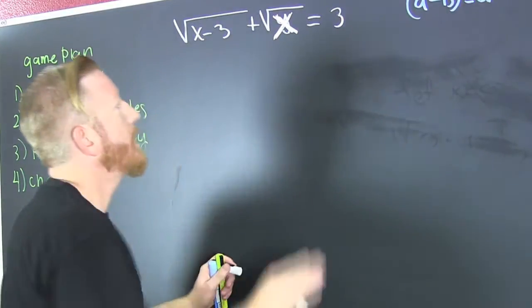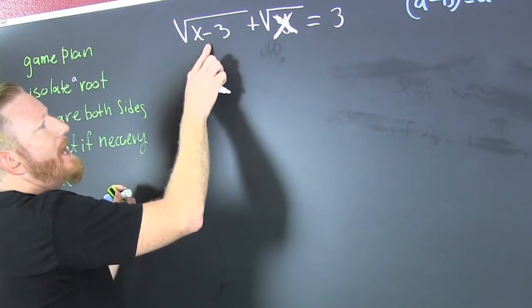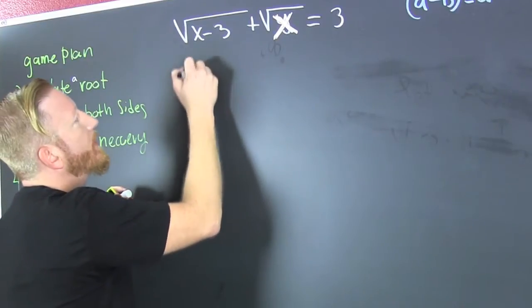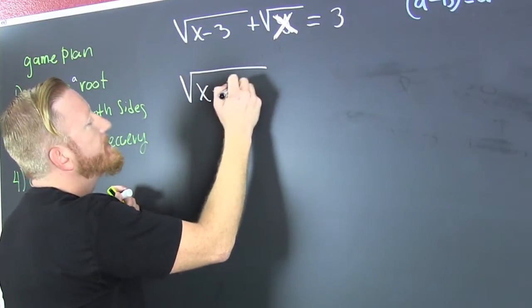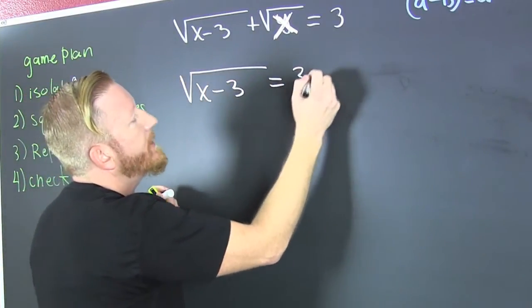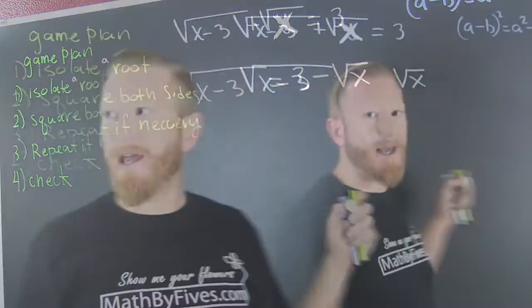I want to isolate the root. Let me do that one. So this is gonna be the square root of x minus 3, that's gonna be 3 minus the square root of x. What's next?